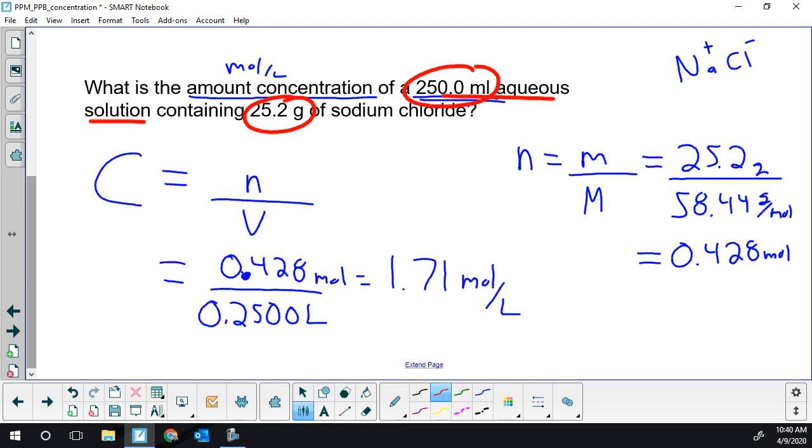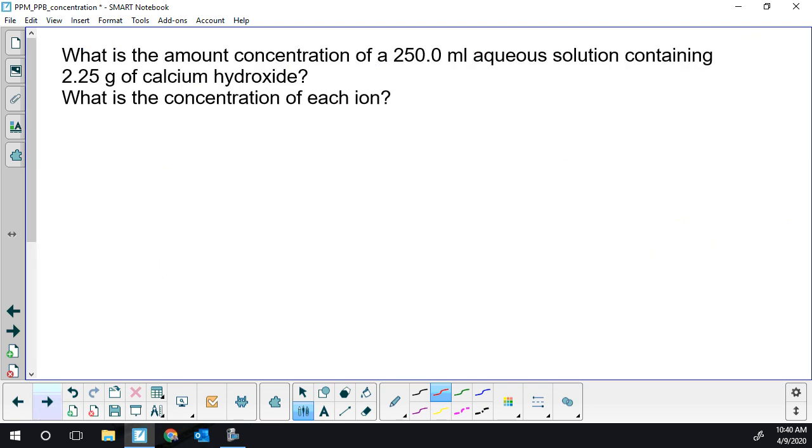Second example, this one's going to have two parts to it. Again, same initial question: what is the amount concentration, and this time it's going to be of a calcium hydroxide solute. Once you're done that, we'll look at what is the concentration of each ion.